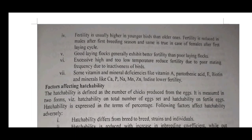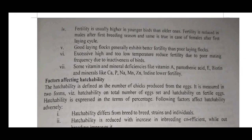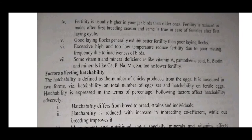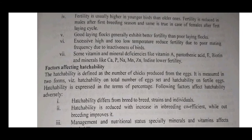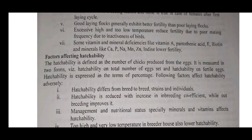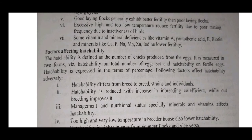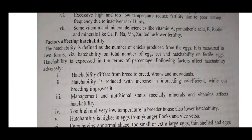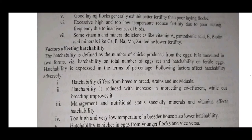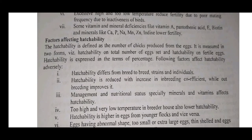Fourth, fertility is generally higher in young flocks than older ones; fertility is reduced in males after the first breeding season, and the same is true for females after the first egg-laying cycle. Fifth, good laying flocks generally exhibit better fertility than poor laying flocks. Sixth, excessively high or low temperature reduces fertility due to poor mating frequency. Seventh, some vitamins and minerals — such as vitamin A, pantothenic acid, vitamin E, biotin, calcium, potassium, sodium, magnesium, and zinc — affect fertility.